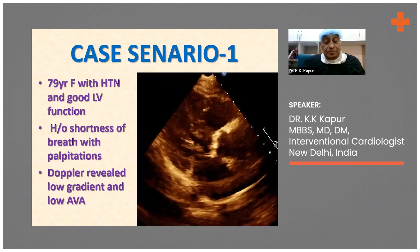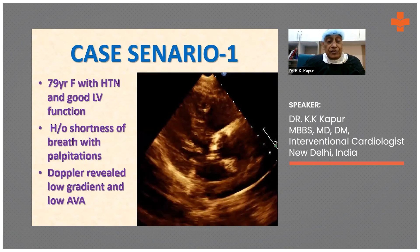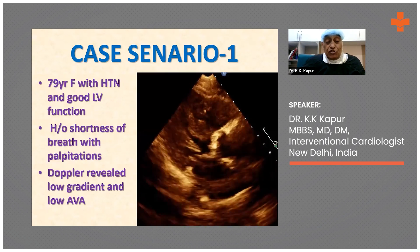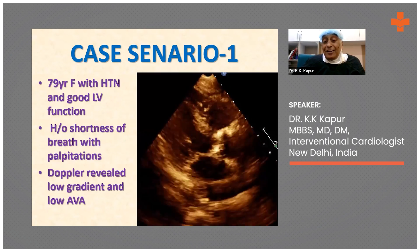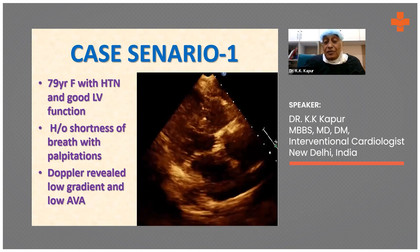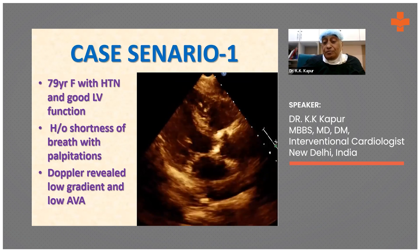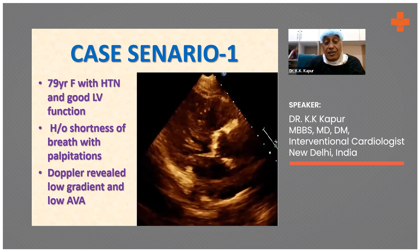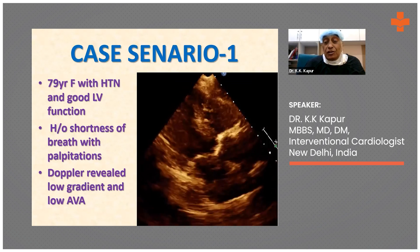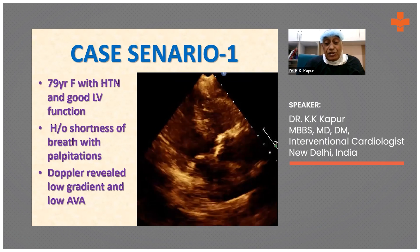Case number 1: a 79-year-old female with hypertension and good LV function, history of shortness of breath with palpitations, and Doppler revealed a low gradient and a low aortic valve area by Doppler. You can see here a calcified aortic valve, left ventricular hypertrophy, and the LV function is quite good. Yet this patient had a low aortic valve area of less than 1 cm² and a low pressure gradient — this comes under the category of paradoxical low flow, low gradient aortic stenosis.